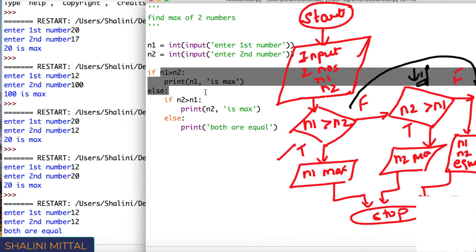So if this is true, print n1 is max, done. Else, it again goes and checks if n2 is greater than n1, true, print n2 is max, else both are equal.